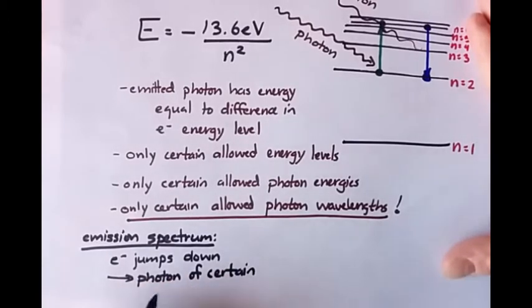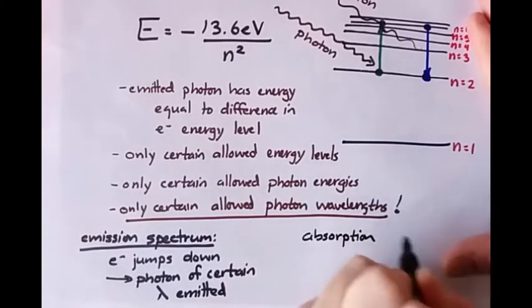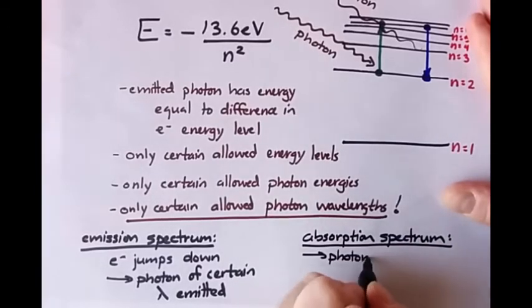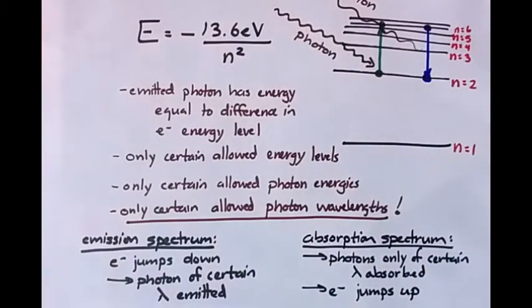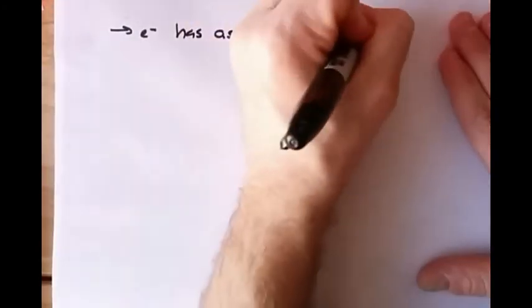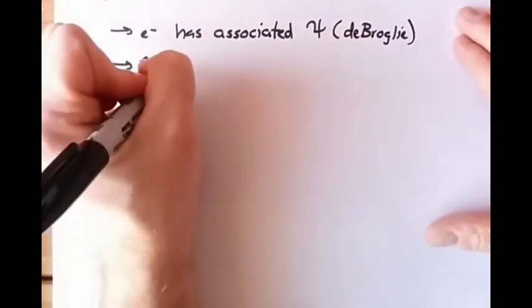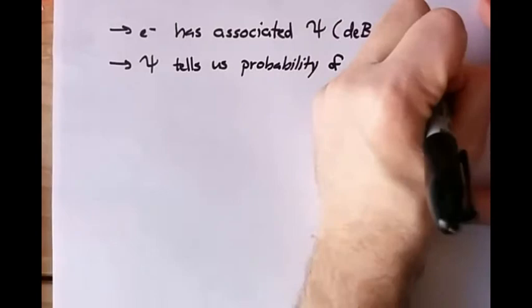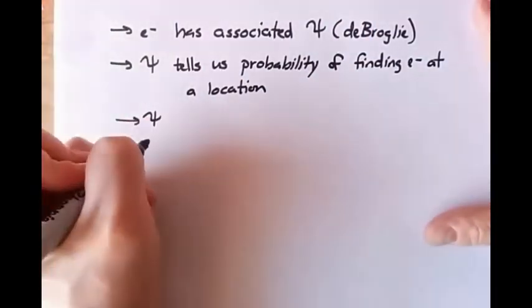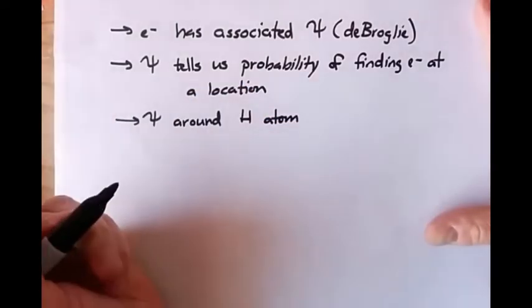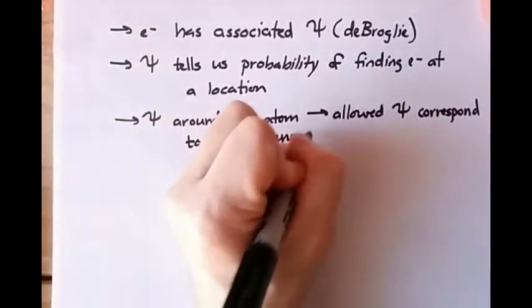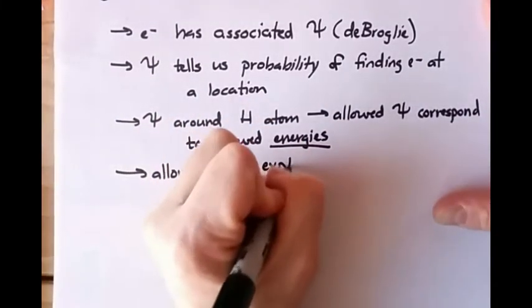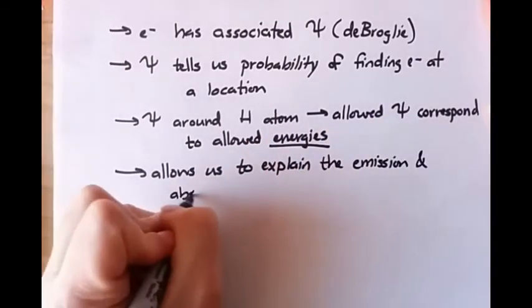We started by accepting the de Broglie hypothesis, then said the wave associated with the electron is described by the wave function from the Schrödinger equation. The absolute value of the wave function squared tells us the probability of finding the electron at any given location. Applying this to an electron in a hydrogen atom, we can derive the allowed energies in these orbitals, which explains why the hydrogen spectrum looks like it does. That is a huge success of the Schrödinger model.